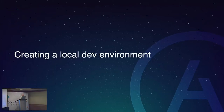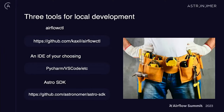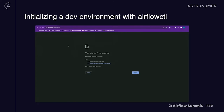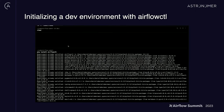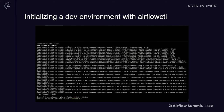Let's start with creating a local dev environment. You're going to need Airflow CTL, an IDE of your choosing, and optionally but recommended, the Astro SDK. Here's an example of what it looks like to create a new dev environment with Airflow CTL. We didn't have anything running. We're able to pip install Airflow CTL. And now once it's installed, you really only have to run three commands. The first is airflowctl init, which creates your Airflow project.